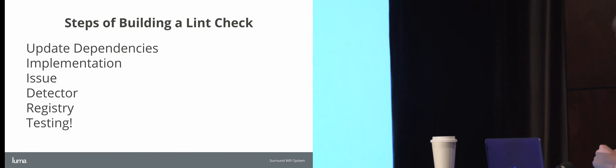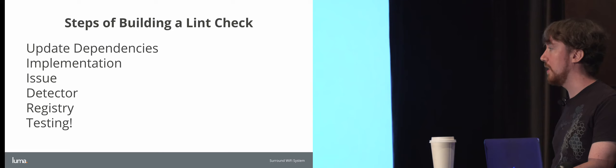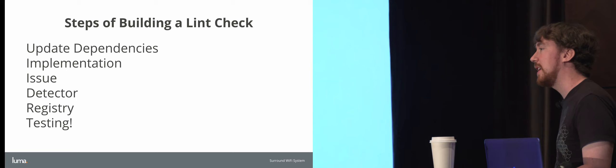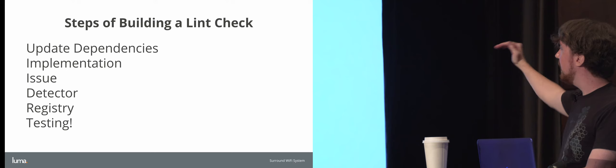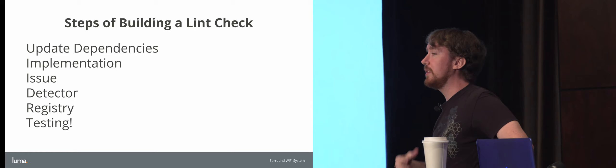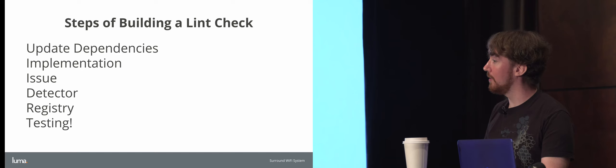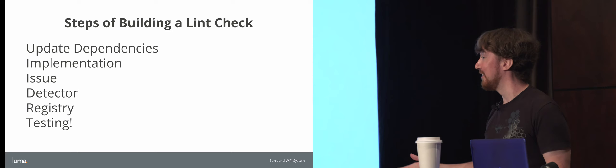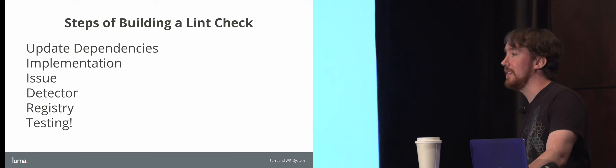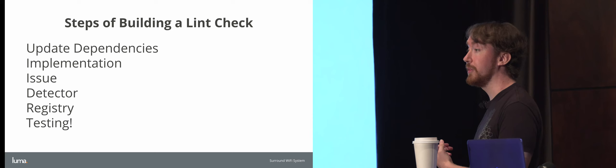We're going to go through the steps. We'll start with updating our dependencies — where many great journeys in Android development begin. The next step will be our implementation, because we've got to figure out where we're looking before we determine what we're looking for. Then we'll create our issue, detector, and registry. Finally, and I want to stress this — we want to test. Lint checks, unlike many parts of Android development, are actually really easy to test. We simply provide a file that contains the error and a file that does not, run Lint on those files locally, and check the output. I highly recommend testing — this is actually a pretty great use case for test-driven development.